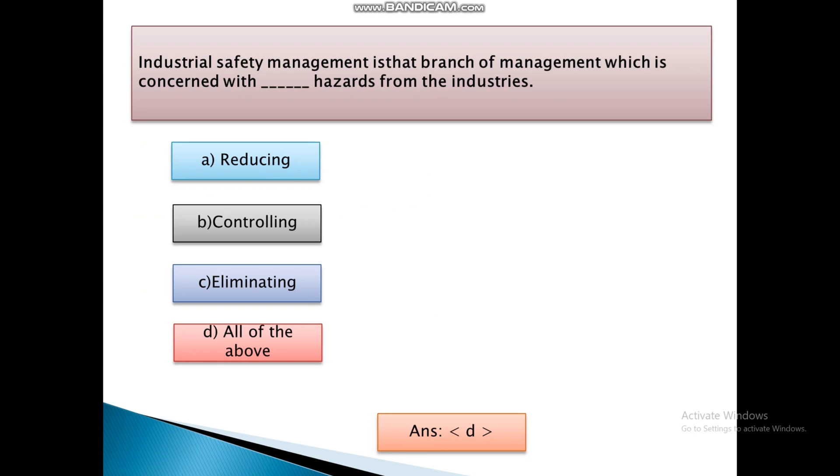First question is: Industrial safety management is that branch of management which is concerned with dash hazards from the industries. Options are reducing, controlling, eliminating, and fourth is all of the above. And the answer is all of the above.